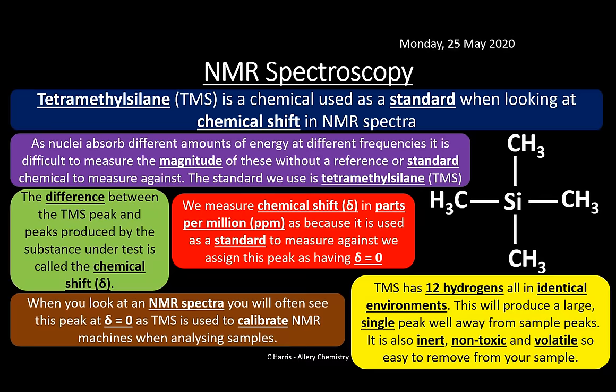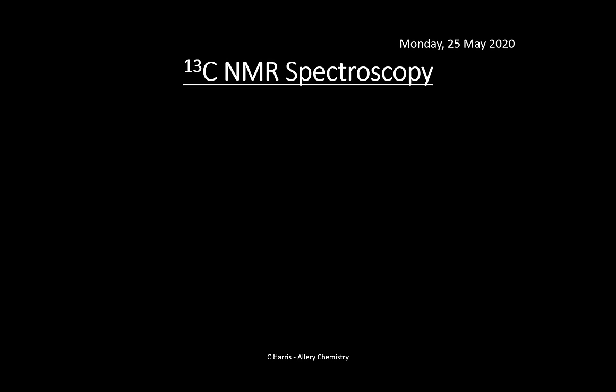In an NMR spectrum, you'll always see a peak at zero — that's TMS, your reference chemical, used to calibrate the NMR machine. Everything is measured relative to that. You'll be given chemical shift data in the exam on a data sheet, which you use to work out what functional groups or structure you have. Now let's look at some spectra — starting with carbon-13 NMR.